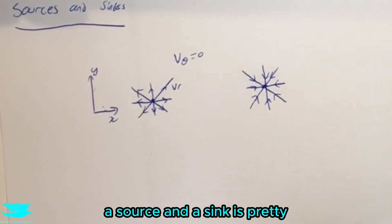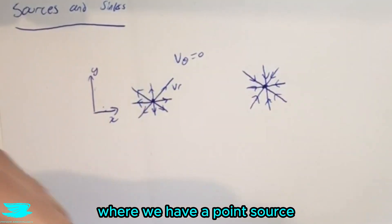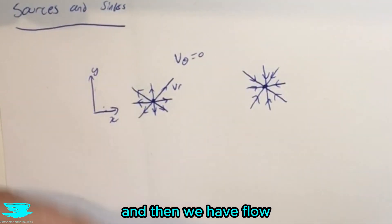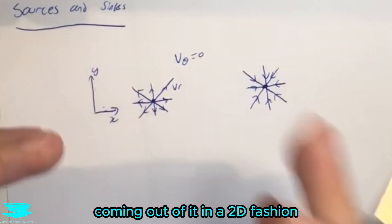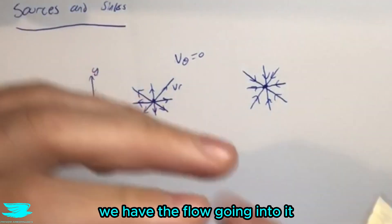So just to begin with, a source and a sink is pretty much what they sound like. A source is on the left here where we have a point source and then we have flow coming out of it in a 2D fashion radially. A sink is the exact opposite where we have the flow going into it.